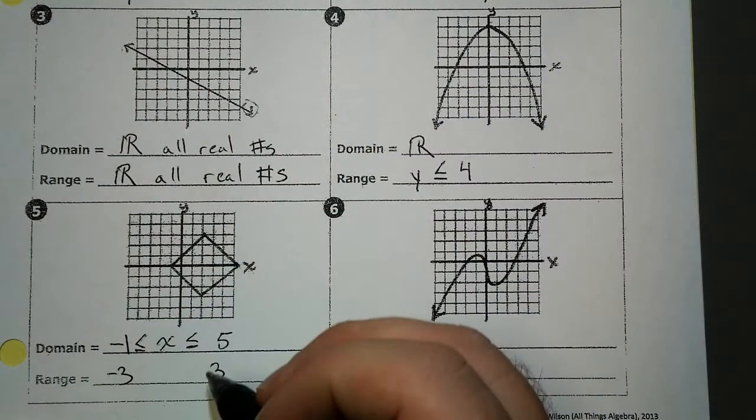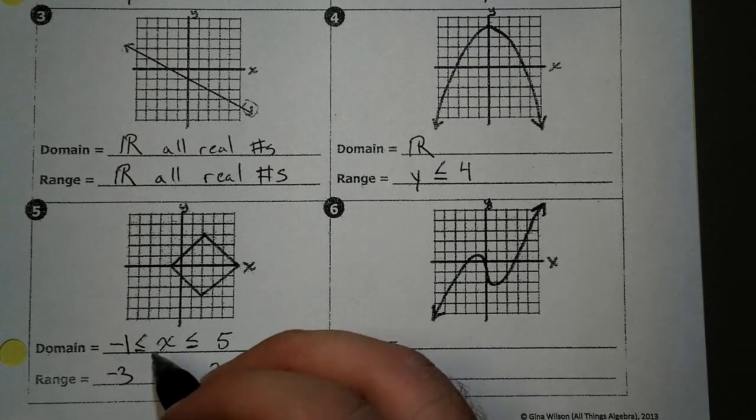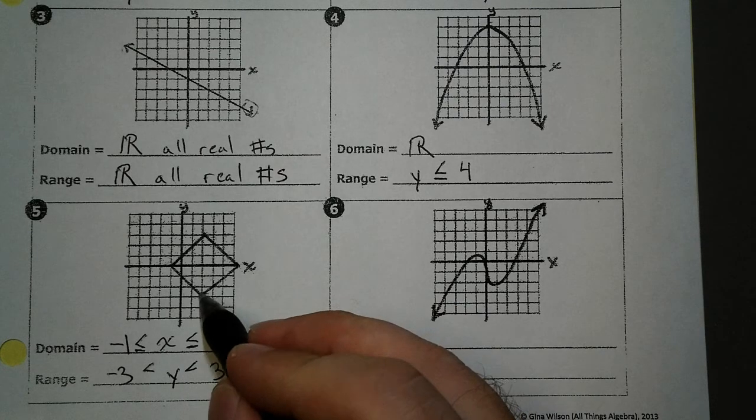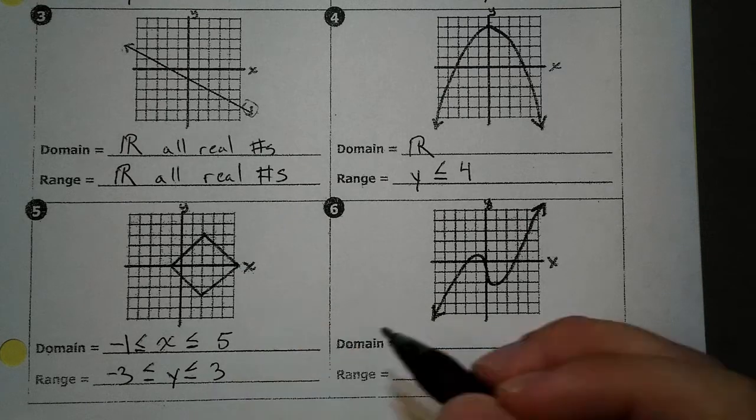Remember, range, you're comparing it to your y's. Since I've got my smallest number over there, biggest number over there, your symbols will go just like this. And close dot, so it's included. Close dot, so it's included. And that's it.